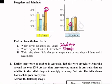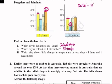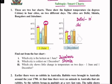Question number three: which city shows little change in temperature on the two days — 1st June and 1st December? First we will find out the change in temperature on two days. Delhi: 33 degrees Celsius on 1st June and 23 degrees Celsius on 1st December — the difference is 10 degrees Celsius. Shimla: 22 degrees Celsius and 10 degrees Celsius — the difference is 12 degrees Celsius.